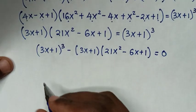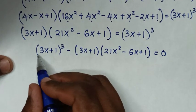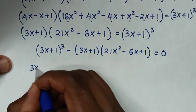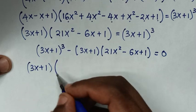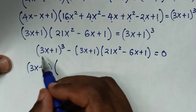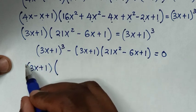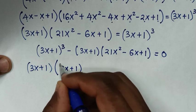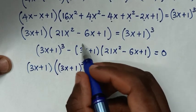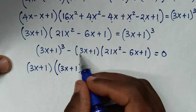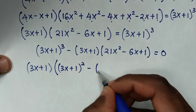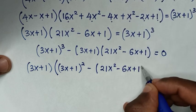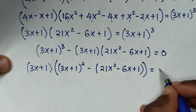In the next step, (3x+1) is common, so we factor it out. Then (3x+1)³ divided by (3x+1) gives (3x+1)², and we are left with (3x+1)[(3x+1)² minus (21x² minus 6x plus 1)] equals 0.